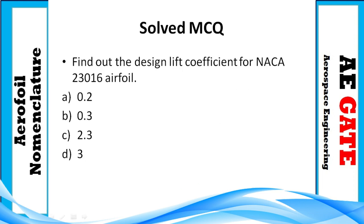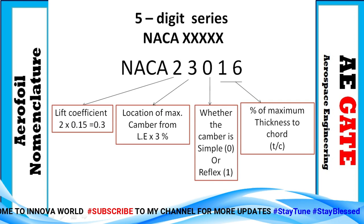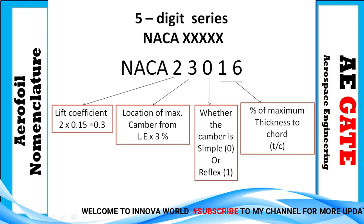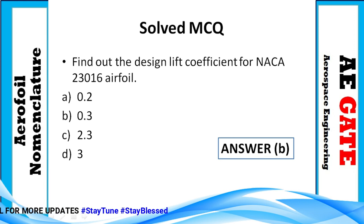MCQ 2: Find the design lift coefficient for NACA 23016 airfoil. This is a five-digit series. The first digit '2' gives CL = 2 × 0.15 = 0.3. The location of maximum camber is 3 × 3 = 9% of chord. '0' represents simple camber, and the last two digits '16' represent 16% thickness-to-chord ratio. The answer asked is lift coefficient, so the correct answer is option B.